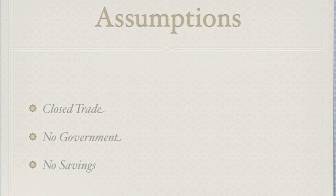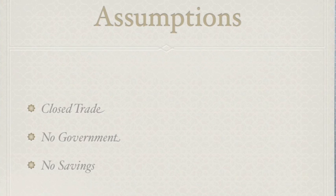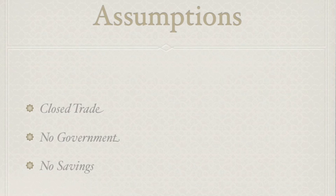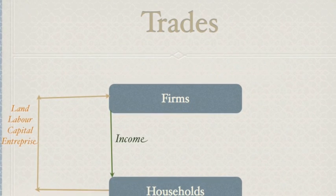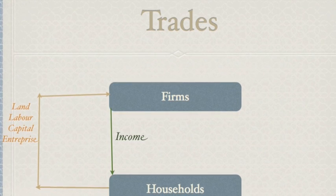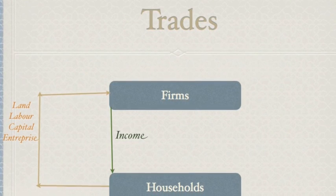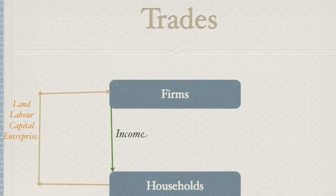We will see in a short while what actually happens when these assumptions are removed, but for now let me explain how the two economic agents — firms and households — are engaged in this model. What happens is households own the factors of production which firms demand in order to produce goods and services, because for reasons stated above they seek rewards.